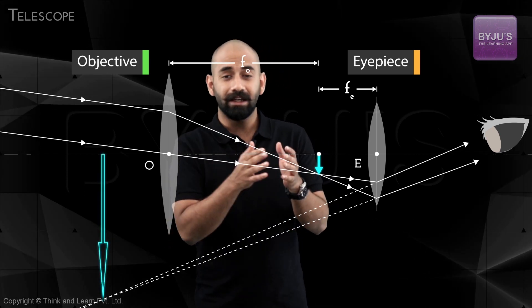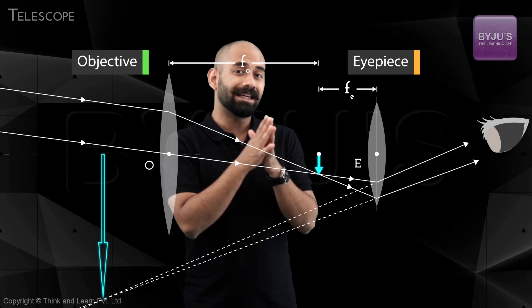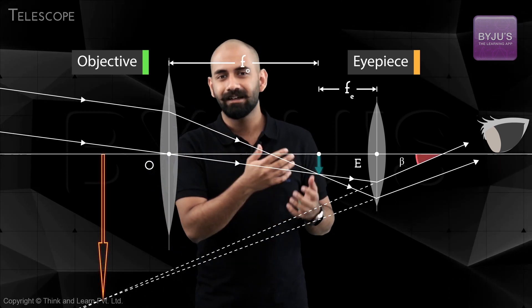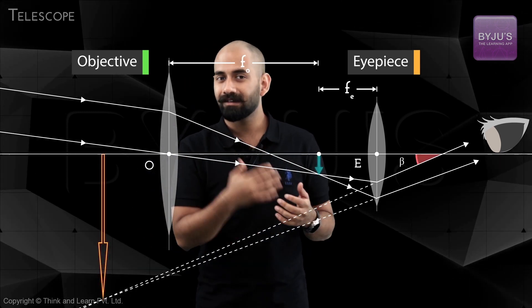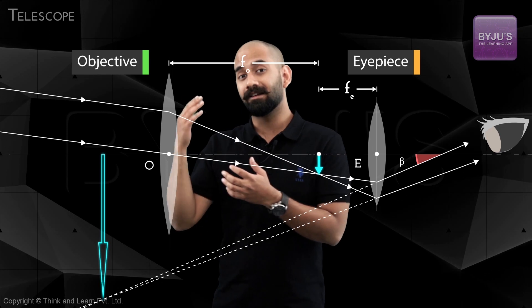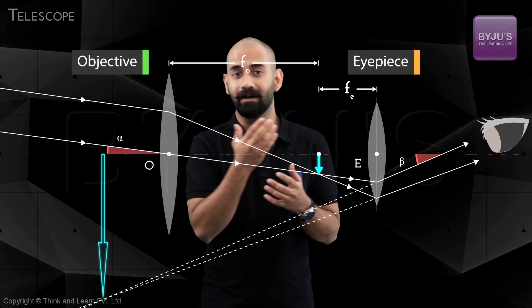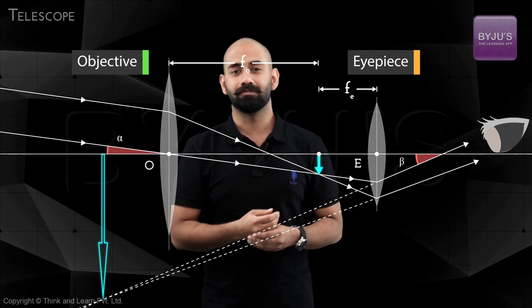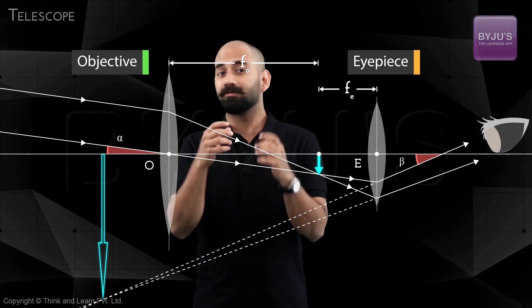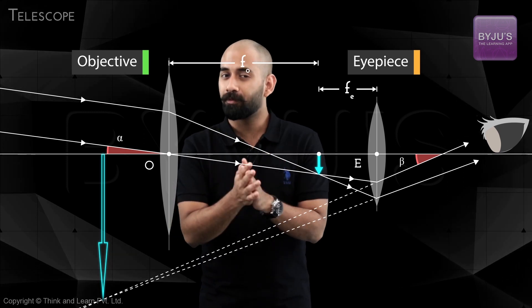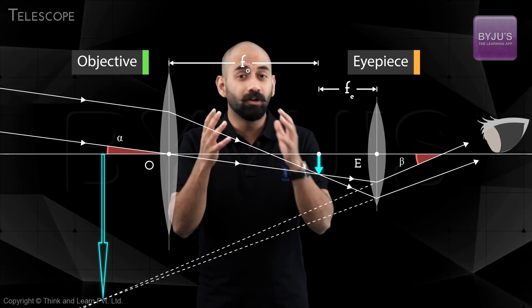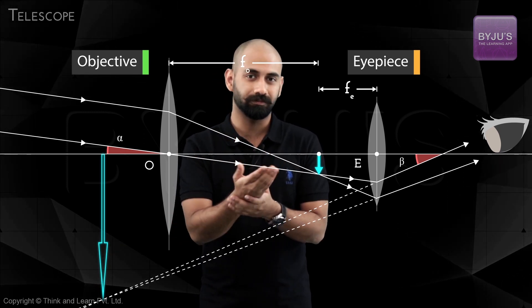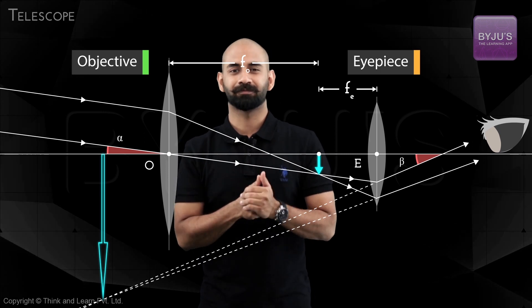You can see that the angle subtended by this final image at the eye is greater than the angle that the original object subtended at the eye. So this is why when you see through a telescope, it looks like the object is much closer. And that's how telescopes work.